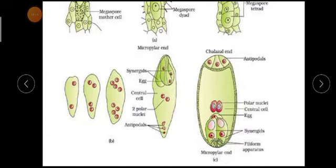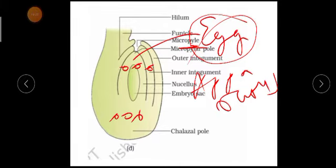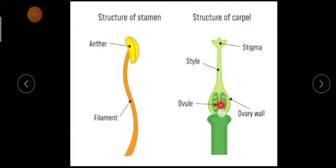This is the ovum which will be fertilized by the pollen grain when it comes, and the entire process happens inside the ovule, which is inside the ovary of the flower. This is how megasporogenesis occurs and how the egg is produced. After production of the egg, pollen grains from the stamens will fall on the stigma, travel through the style, enter the ovule, fertilize the egg, and give birth to a new seed, resulting in the formation of a new plant. Thank you for your concentration; we will meet in our next class with a new topic.